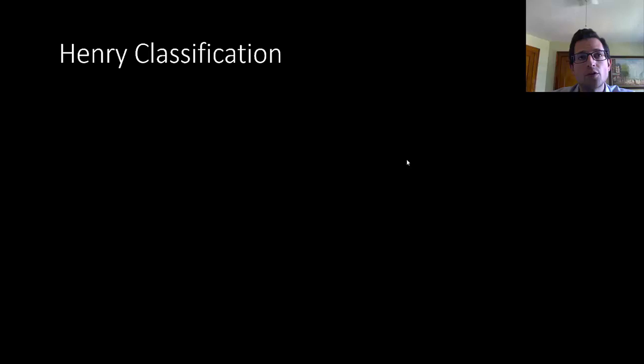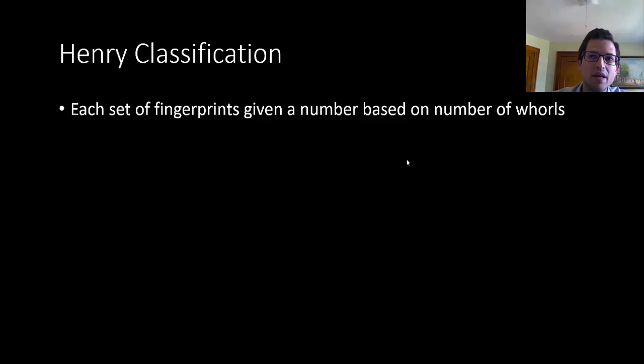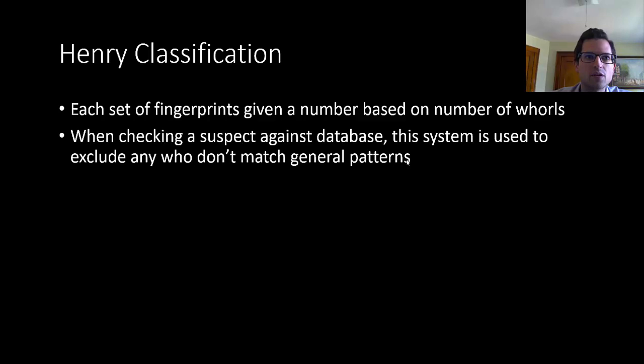Once we've analyzed every fingerprint in terms of whether it's a whorl or a loop or an arch, we can do what's called a Henry primary classification. We give each set of fingerprints a number based on the number of whorls in the fingerprints. If you have three out of ten of your fingers are whorls and those whorls are on your right thumb and your left index finger and your left pinky, then you'll have one number. If somebody else has three whorls as well but on different fingers, they'll get a different number.